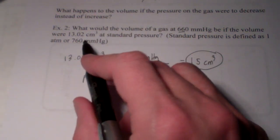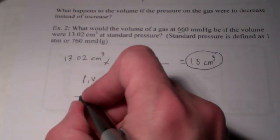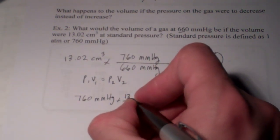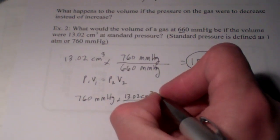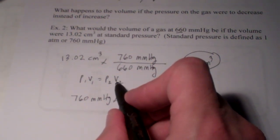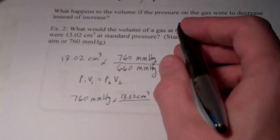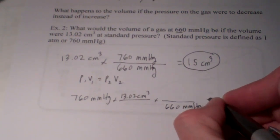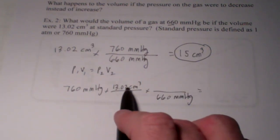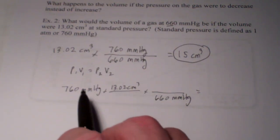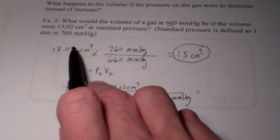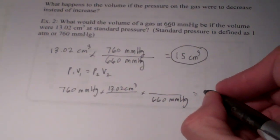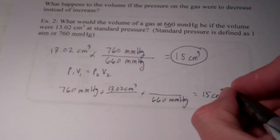So, P1 is 760 millimeters of mercury. And the volume was 13.02 cubic centimeters. Now, I'm solving for V2 again, so I'm going to divide by P2, which is 660 millimeters of mercury. So I have P1 times V1 divided by P2. Notice it's the same operation that I did up above. 760 times 13.02 divided by 660. And once again, I will get 15 cubic centimeters.